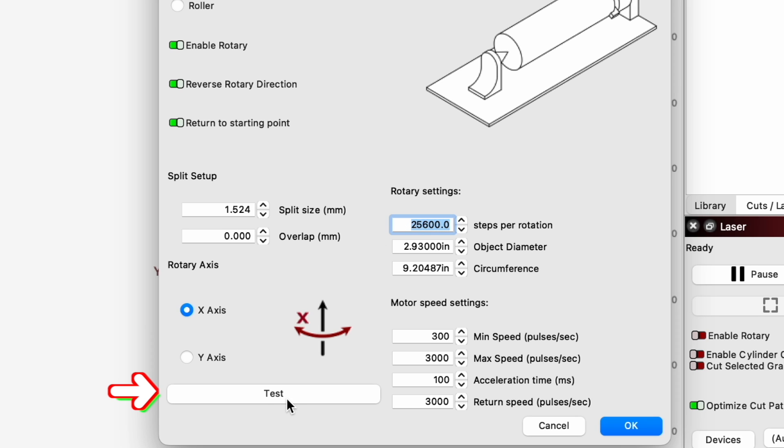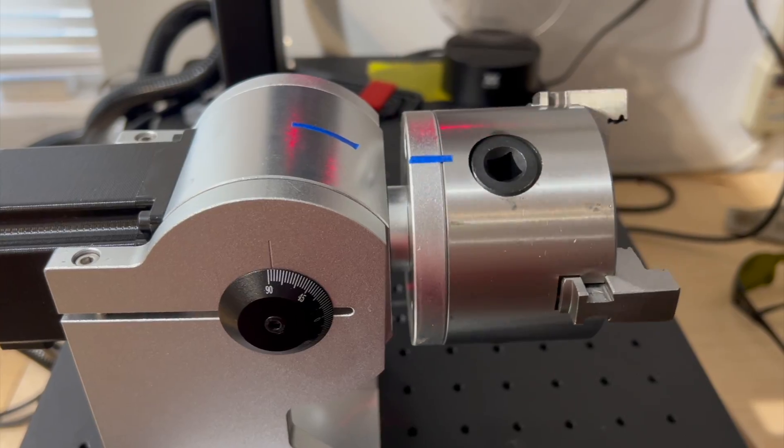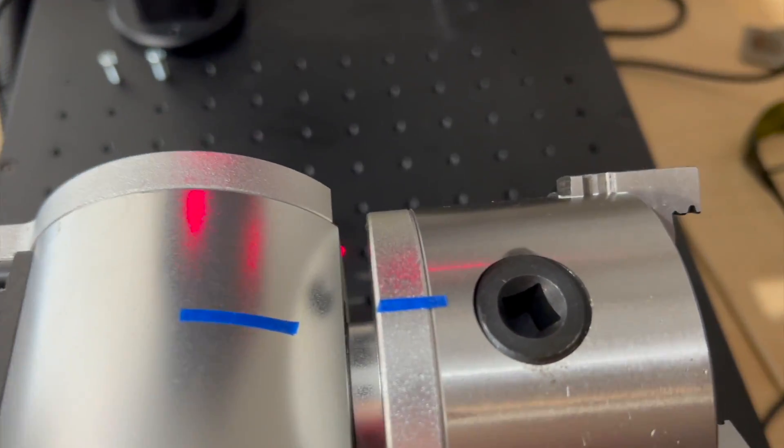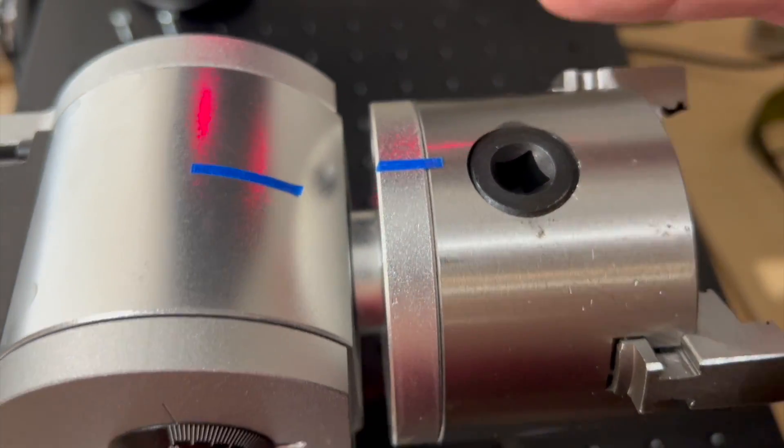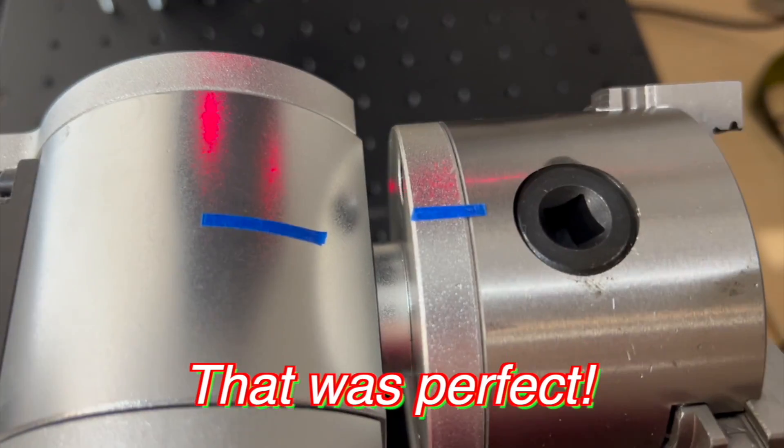And to do that, we're going to hit this test button. But we want to select the right axis that we're going to have this thing set up. And right now, we're going to set it up with the Y axis. So it's going to rotate along the Y axis of our design. Now we're going to click test and make sure that our tape line goes all the way around. So you saw that was perfectly lined up after it rotated all the way around. And then it rotated all the way back and it is lined up again. So that was perfect.